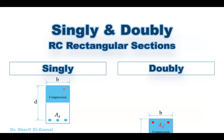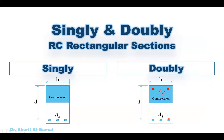For the singly reinforced rectangular section, you have only steel reinforcement in the tension side and no steel reinforcement in the compression side. However, for the doubly reinforced rectangular section, in addition to the steel in the tension side, we have also steel in the compression side, called A's or compression steel. Within this video, we'll be learning how to design singly reinforced rectangular sections, and then in the coming video, we'll learn about doubly reinforced rectangular sections.